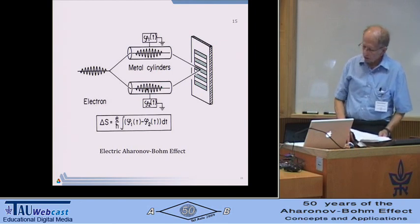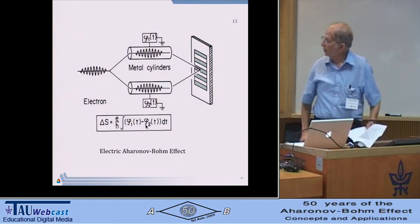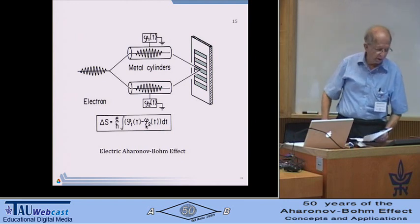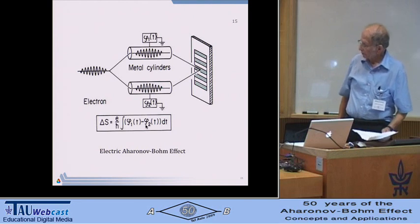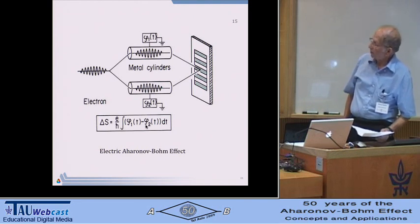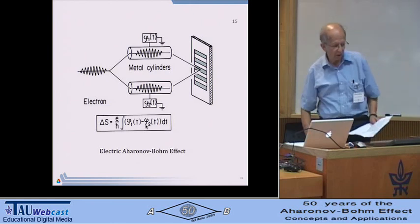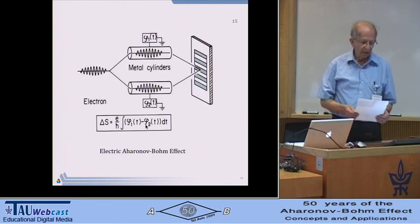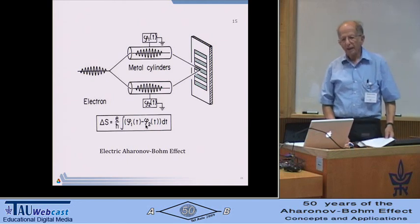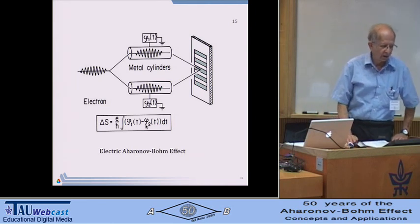Now, there are electric fields happening all right, but the electrons, in principle, can be completely shielded from them, so they never experience an electric field. And then, of course, there is this interference pattern. And the change in the action or, if you like, the shift in phase between the two waves is proportional to the difference in voltage integrated over the time. And, therefore, the interference pattern will be sensitive to this change in the voltage and, therefore, to the electric field, which the electron never experienced.